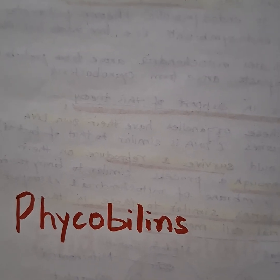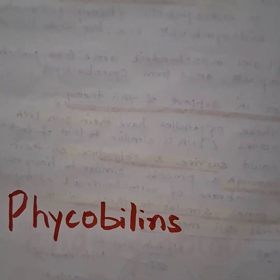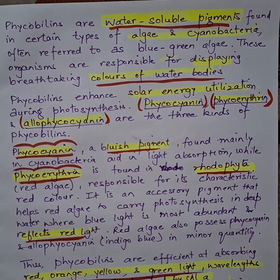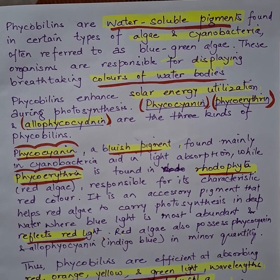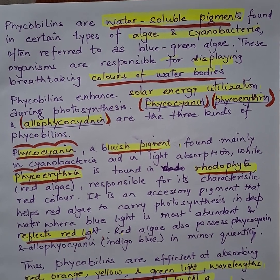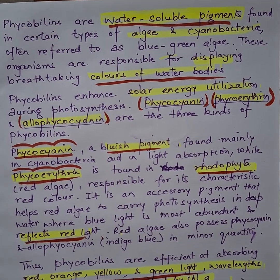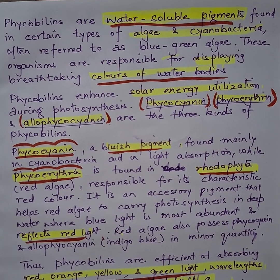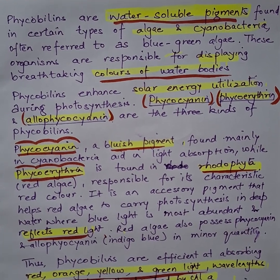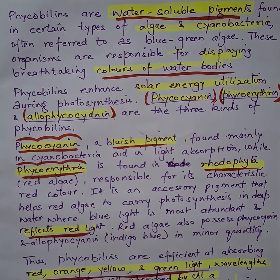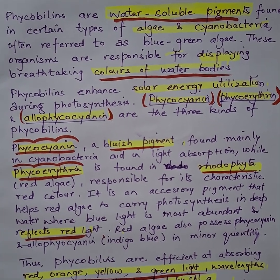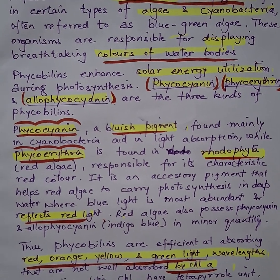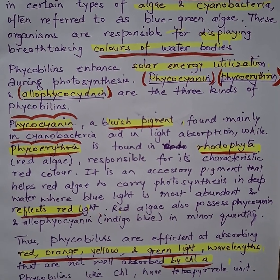Let's talk about phycobillins. These are water-soluble pigments found in certain types of algae and cyanobacteria. Because of phycobillins, water bodies display different kinds of colors. Phycobillins also enhance solar energy utilization during the photosynthesis process.